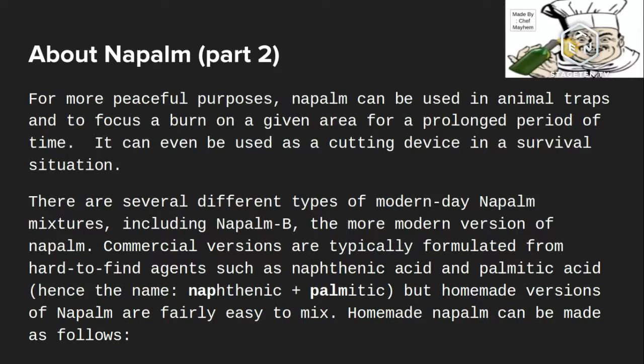There are several different types of modern-day napalm mixtures, including Napalm B, the more modern version. Commercial versions are typically formulated from hard-to-find agents such as naphthenic acid and palmitic acid — hence the name: NAP from naphthenic, PALM from palmitic. Napalm. But homemade versions are fairly easy to mix.